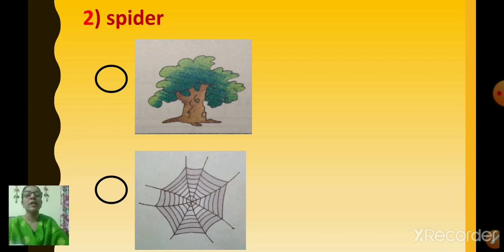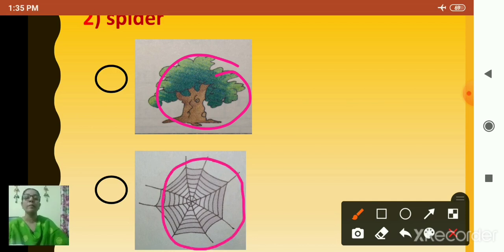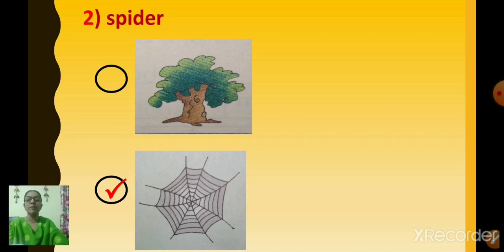Next one. Which is the next animal? Spider. Where does the spider live? What is the home of the spider known as? Is it a tree, or is its home known as a web? Yes, spider's home is web. Click on web. Spider's home is web — it doesn't live on the tree, its home is web.